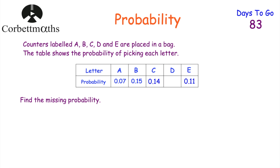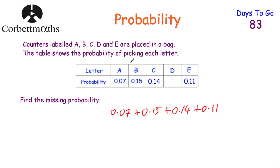Here's one for you to try yourself. Counters are labelled A, B, C, D, and E and placed in a bag. The table shows: P(A) = 0.07, P(B) = 0.15, P(C) = 0.14, P(E) = 0.11. Find the missing probability for D. Adding the known probabilities: 0.07 plus 0.15 plus 0.14 plus 0.11 equals 0.47. So 1 minus 0.47 equals 0.53. The probability of picking D is 0.53.